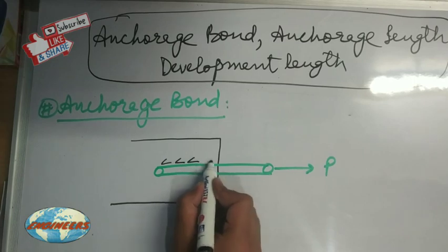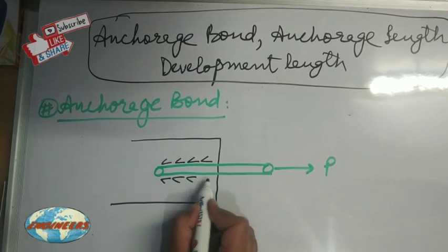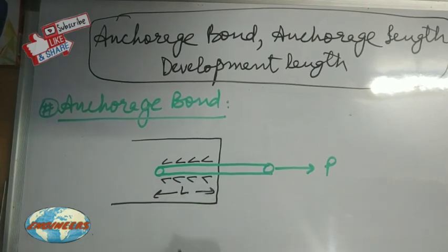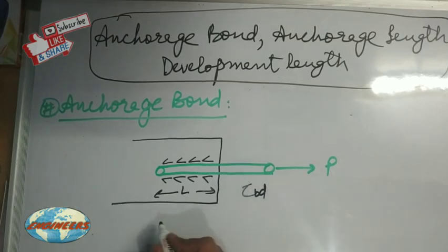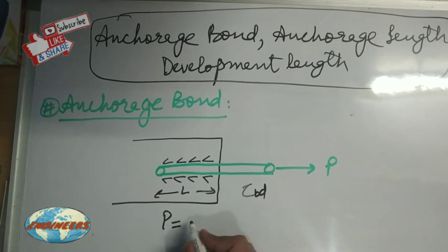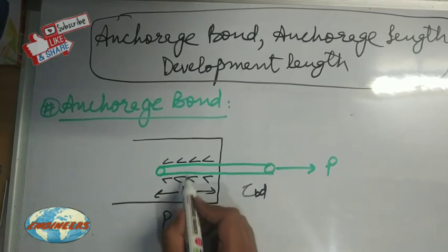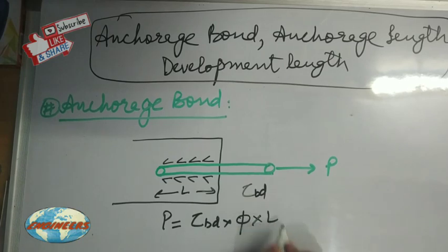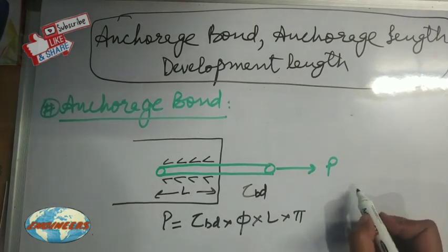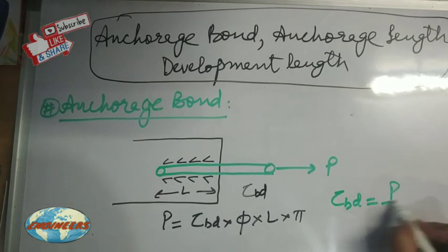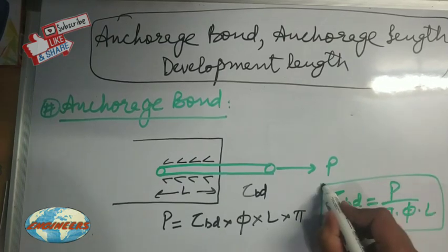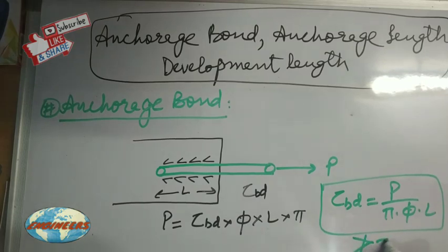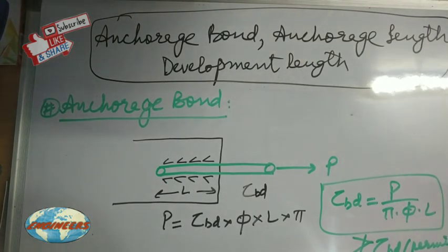Bond stress is developed over this embedded length. If the bond stress is represented by τBD, from this diagram we can write: force equals stress into area, that is τBD into π into φ (diameter of bar) into length. So bond stress τBD equals P upon π into φ into L. This τBD should not be greater than the permissible τBD. This bond stress τBD that is developed is called anchorage bond.